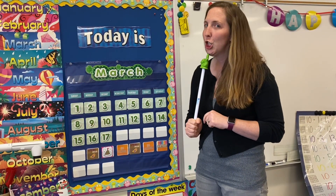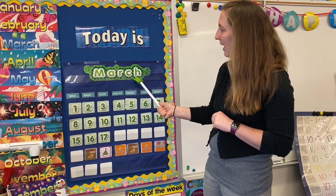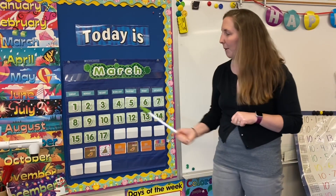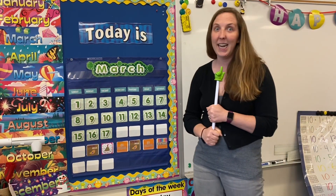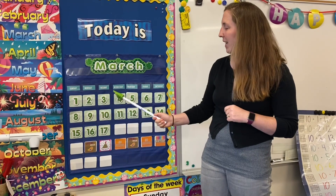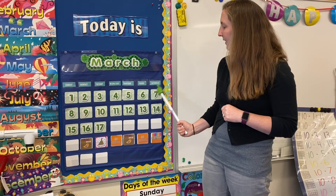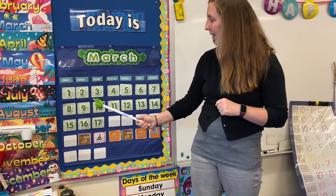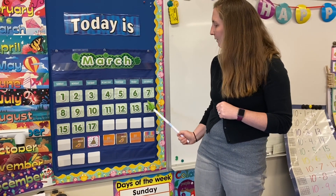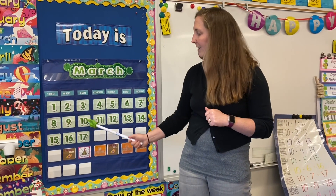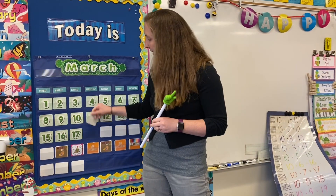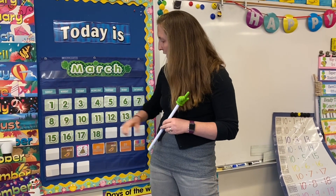That sound we've talked about a little bit is that CH sound at the end. Let's count how many days we've had in March to find out about today. One, two, three, four, five, six, seven, eight, nine, ten, eleven, twelve, thirteen, fourteen, fifteen, sixteen, seventeen, eighteen. Today is the eighteenth day of March.